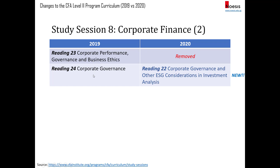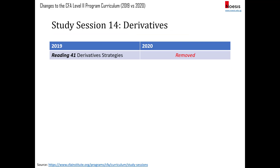For corporate finance, they've removed readings 23 and 24, and added a new reading focusing on corporate governance. They've also added a section on ESG considerations.